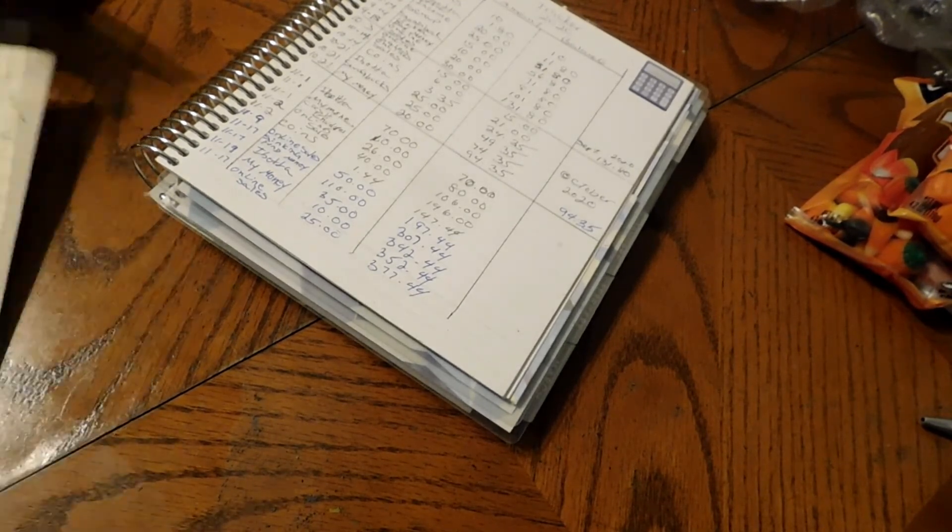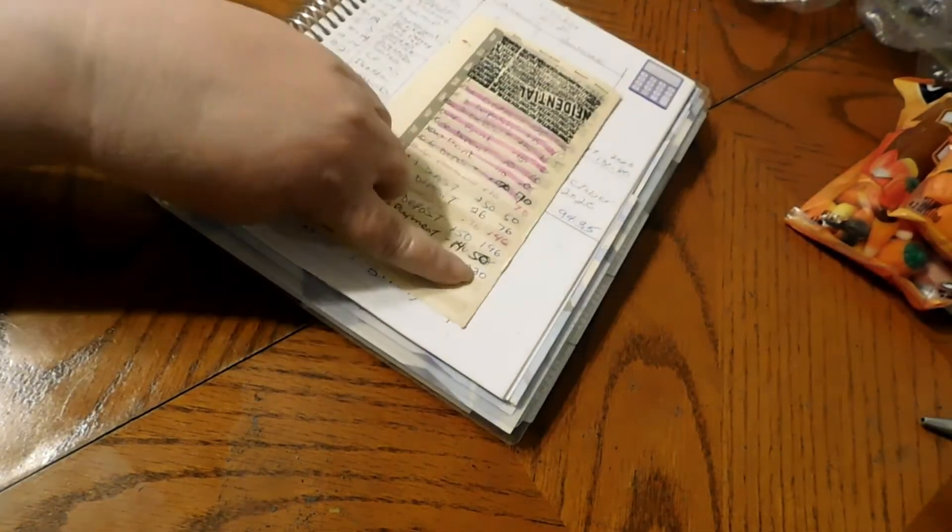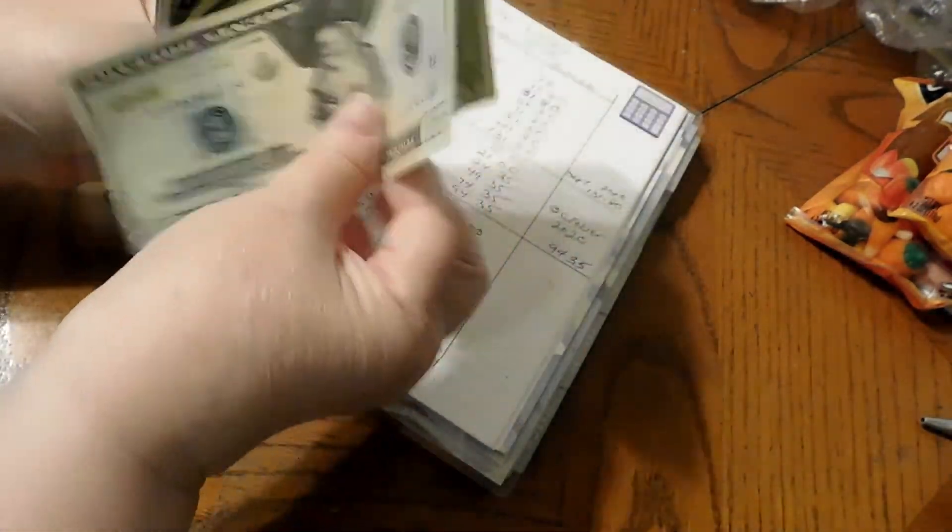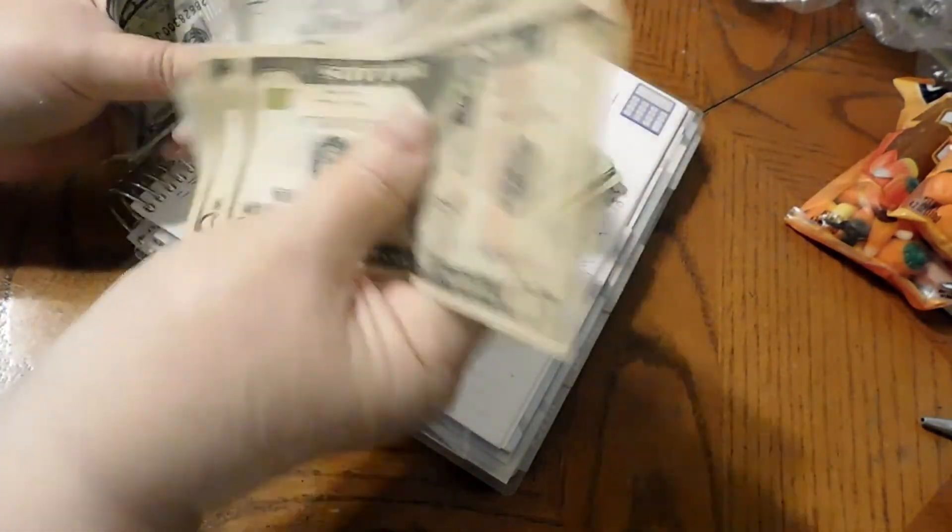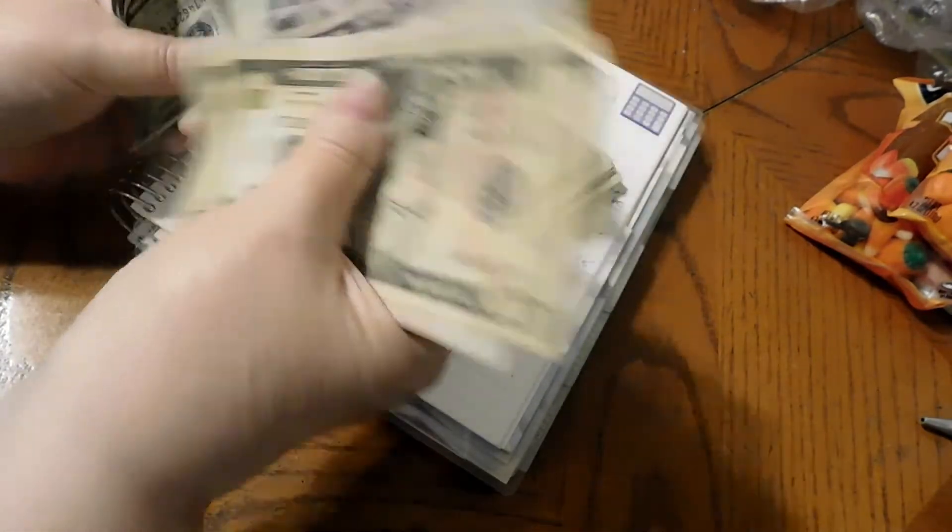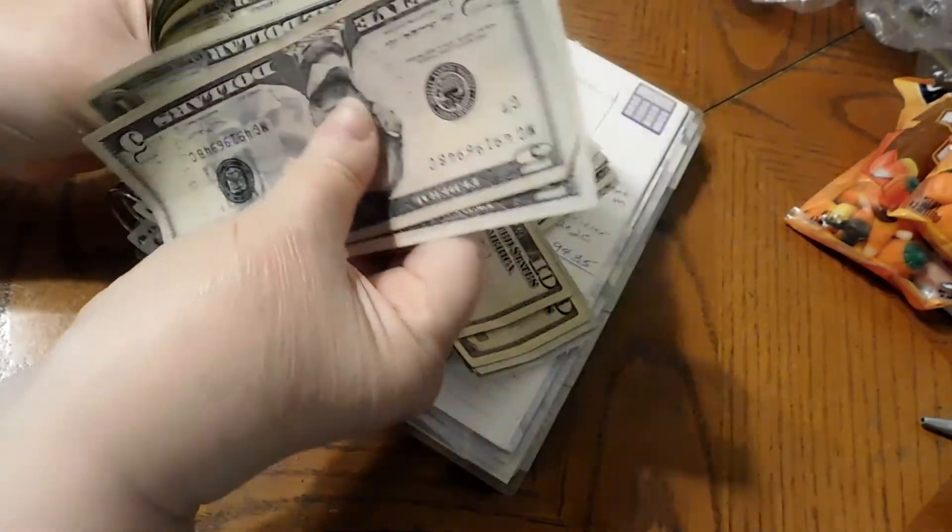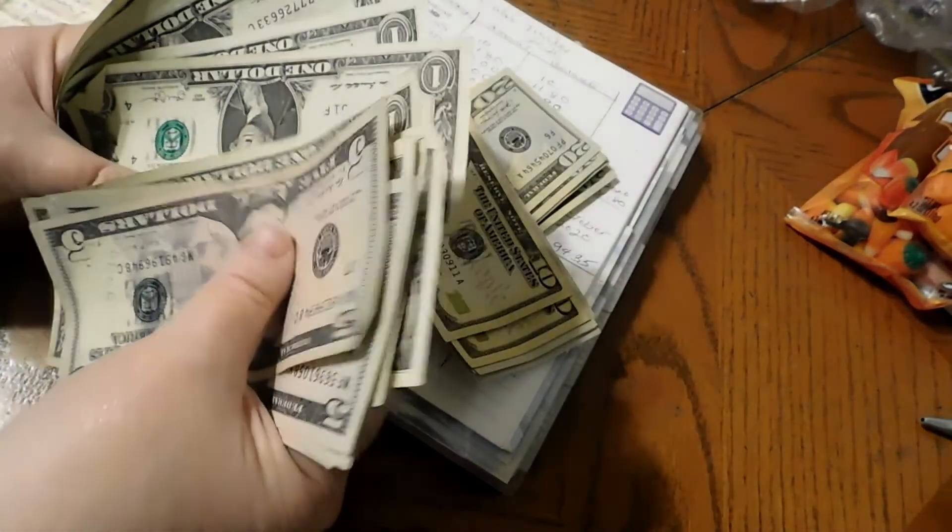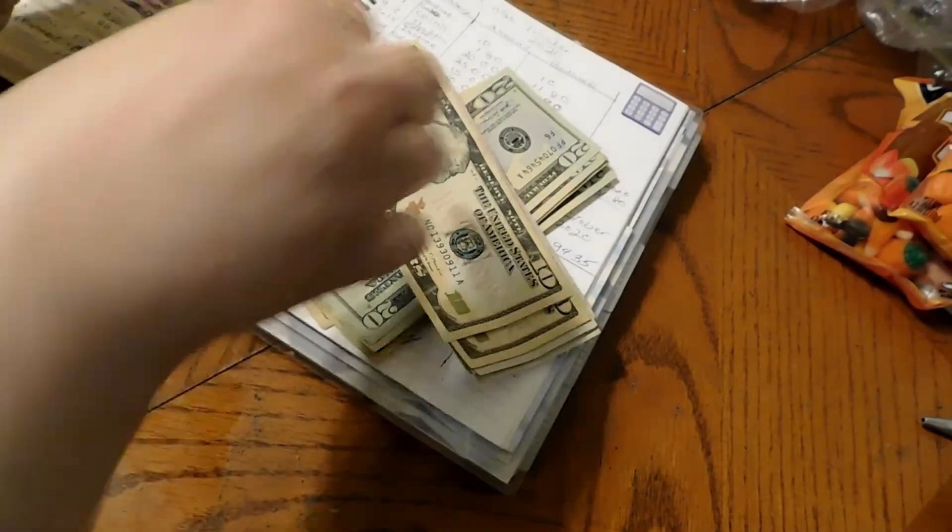And we are going to count the money and make sure that there is $230. $20, $40, $60, $80, $100, $110, $135, $160, $195, $200... $227, $228, $229, $230. Two hundred and thirty dollars. All this money.